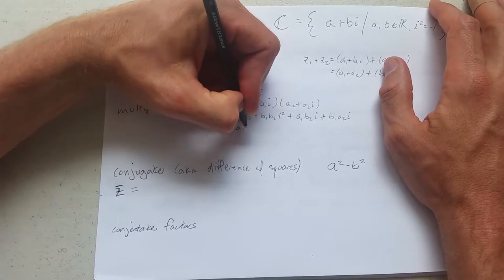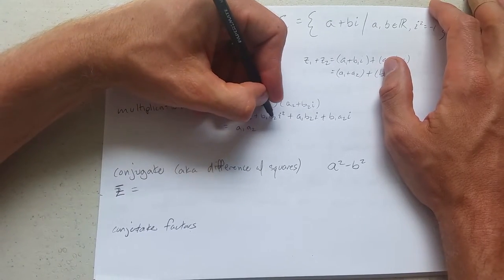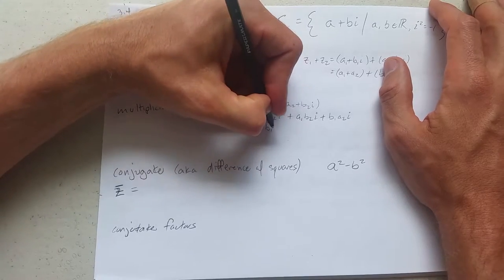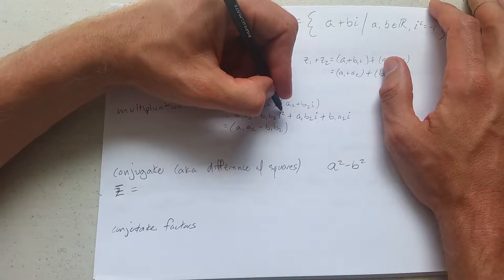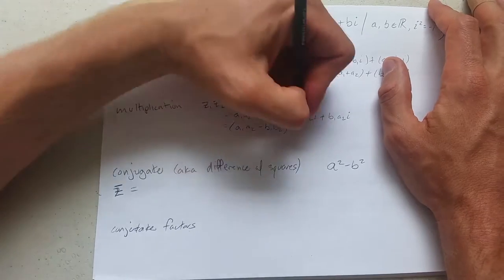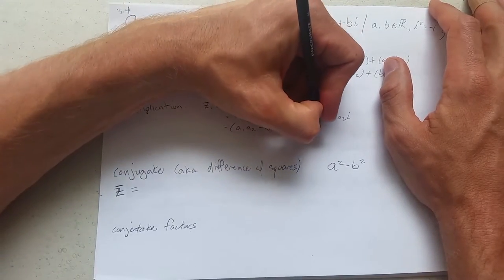Now i squared is negative 1. So this is b1 b2 times negative 1, which is negative b1 b2. i squared is negative 1, so there's no more imaginary part here. And I'm just going to factor the i out of here.